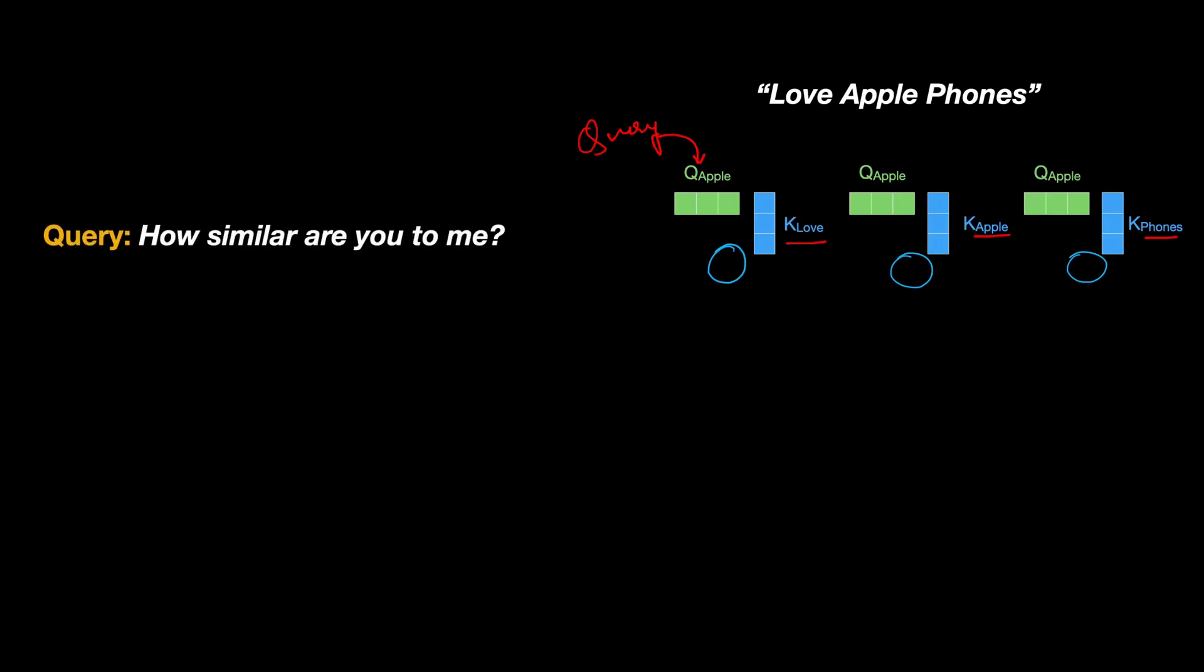It's asking these key vectors, how much is the similarity between you and me? And in response, the key vectors are like answering, what do they have to offer? So that is the reason these vectors are called query and key vectors. Query vectors are asking the key vectors a specific question. They are asking what is the similarity between you and me? And the key vectors are responding with an answer.